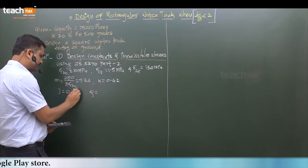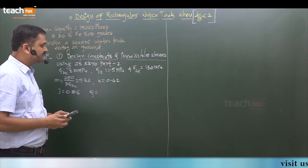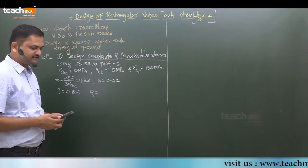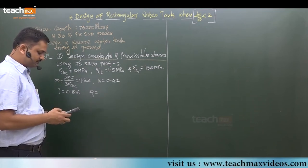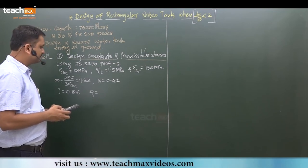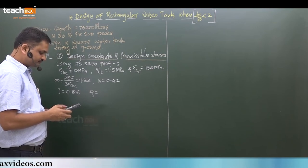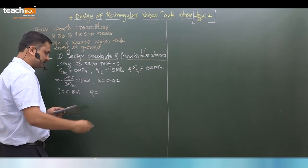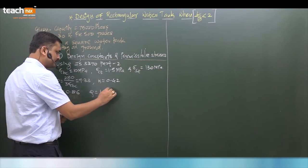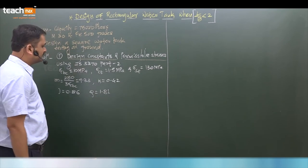What is Q? Q we know: 1 half Sigma CBC into K into J. So 0.5 into Sigma CBC 10 into K 0.42 into J 0.86. Here it is 1.81.